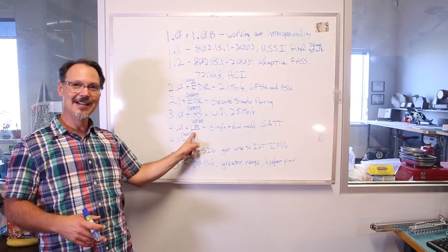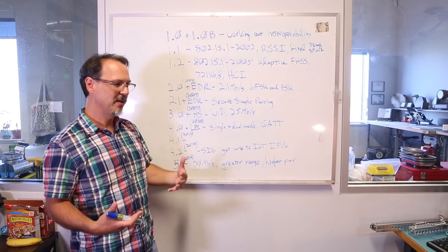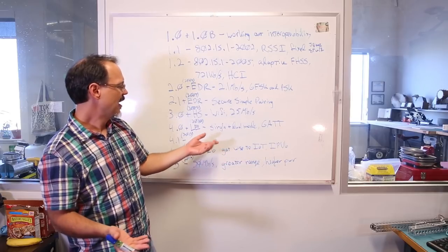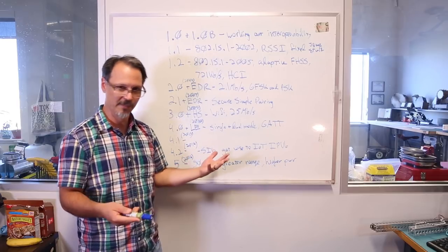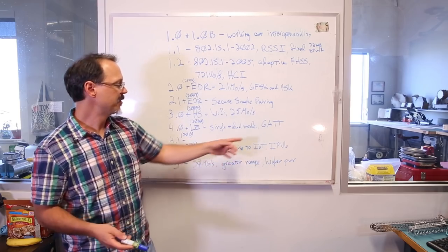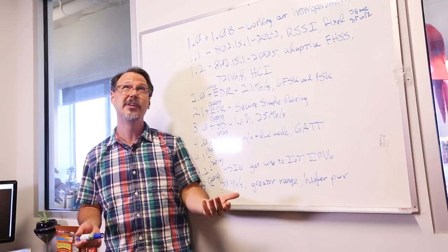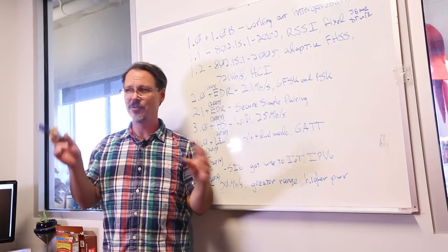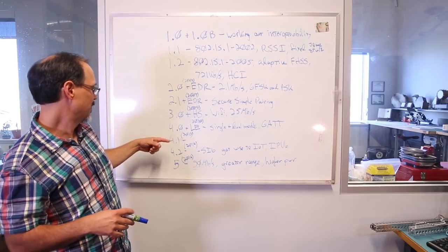There was 2.0 plus EDR in 2004. 2004, EDR, extended data rate. They could get it up to 2.1 megabits per second using Gaussian frequency shift keying and phase shift keying. They have a couple of different versions of phase shift keying that we will talk about in a little bit. 2.1 plus EDR in 2007, where they implemented secure simple pairing. 3.0 plus HS in 2009. This is very interesting. Back in the day, high speed, they implemented Wi-Fi on the same chip. So, if you needed to get a really high data rate, you could switch over to Wi-Fi and you could get 25 megabit per second. Which is pretty cool.